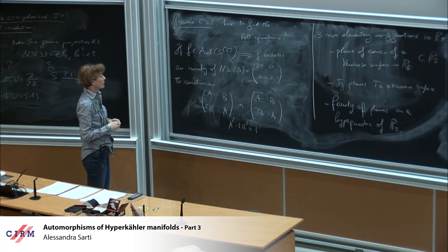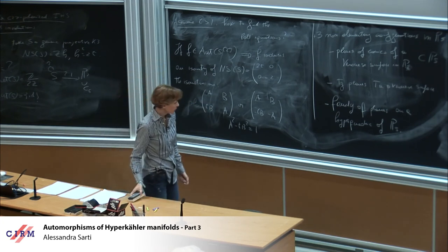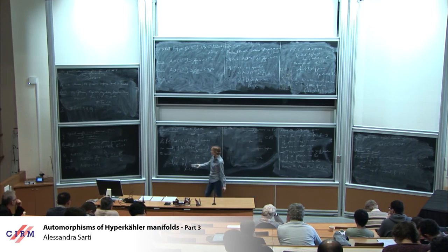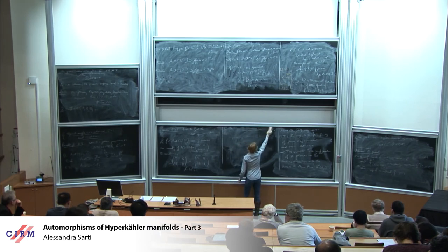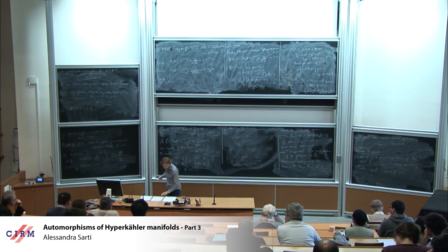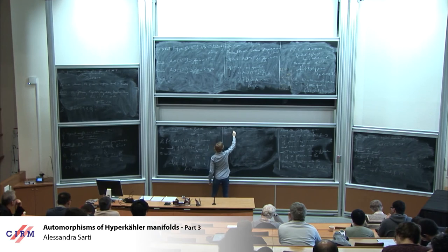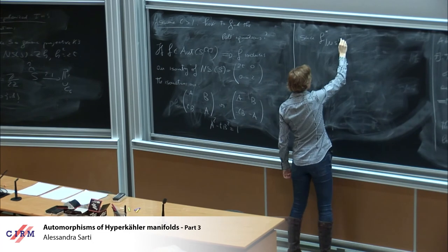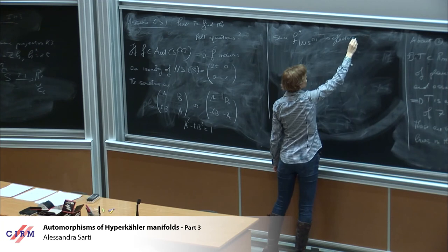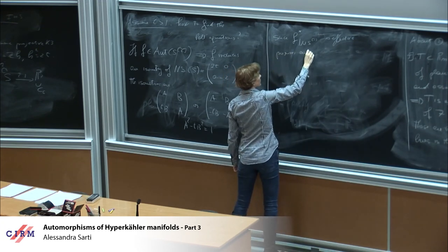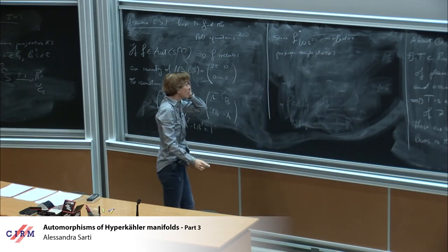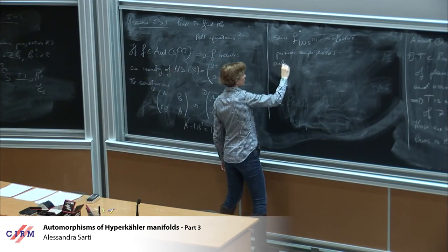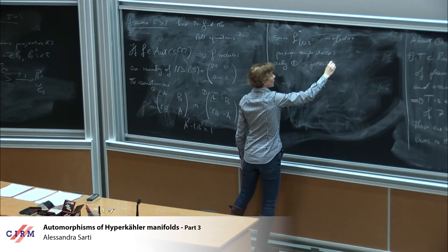There is only this possibility. And then since we have seen this theorem at the beginning, since then f star preserved the exceptional set, then must be natural. So one can show there is some work to do here. Okay, then since f star of e is equal to e, so recall that e is equal to delta, then f star must be natural. Maybe f even. And so f is equal to this natural involution.